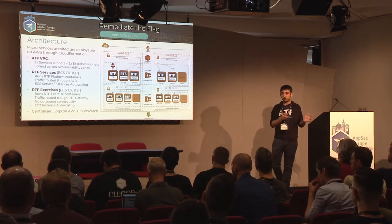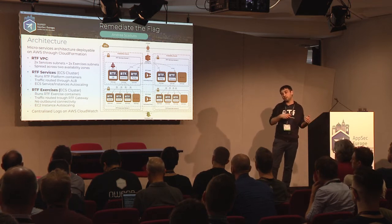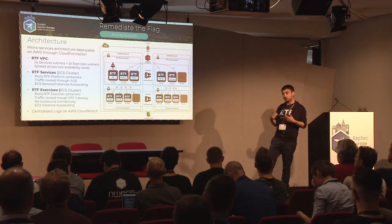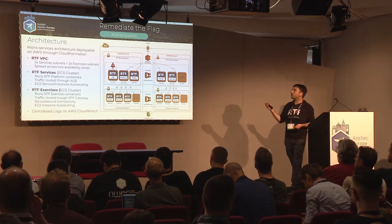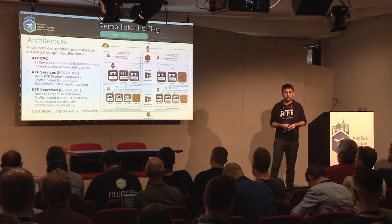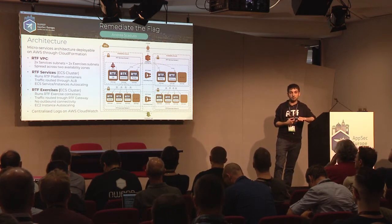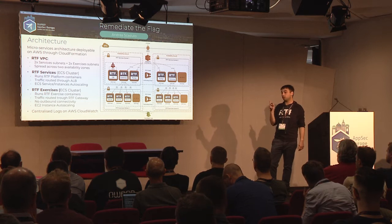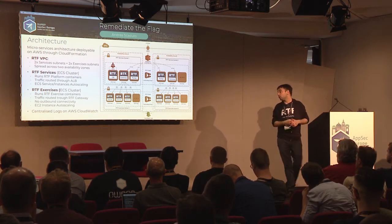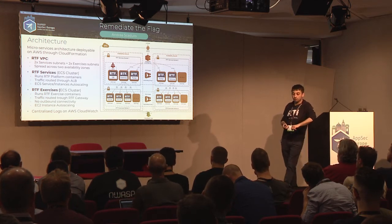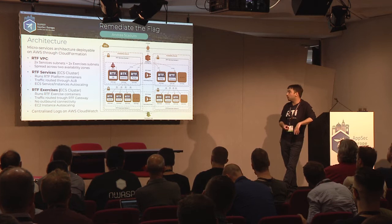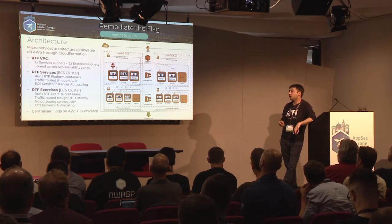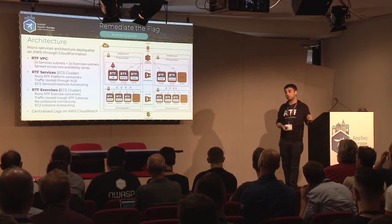The gateway mediates access between users and the exercise containers — it creates an RDP connection to the container and turns it into an HTML5 stream rendered by the user's browser. The RTF portal is the web application users and managers interact with. Traffic is routed through an application load balancer. The number of containers automatically scales based on memory utilization, and the EC2 instances auto-scale based on cluster memory reservation, ensuring transparent scalability based on demand.